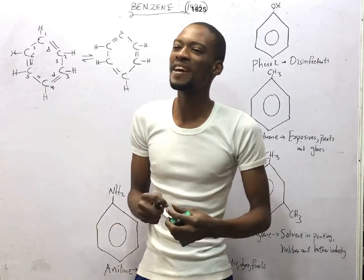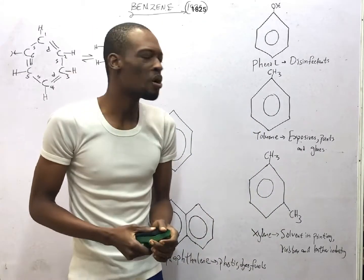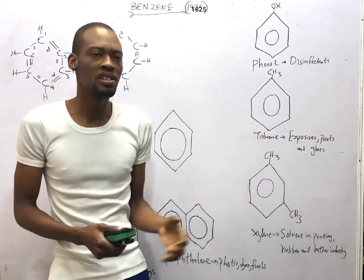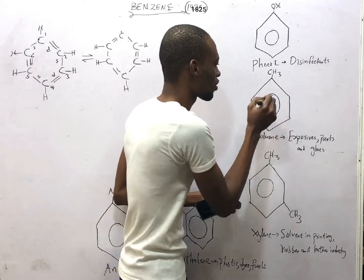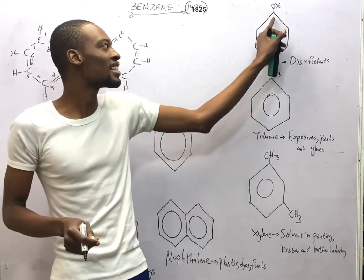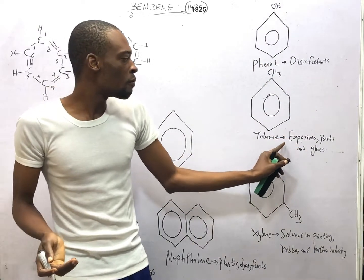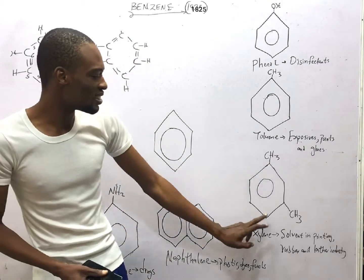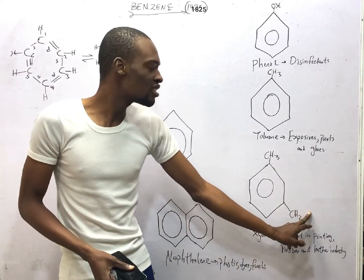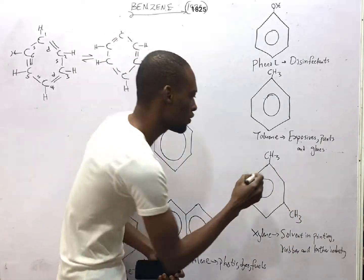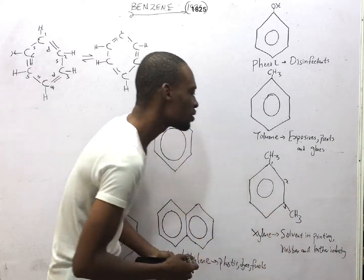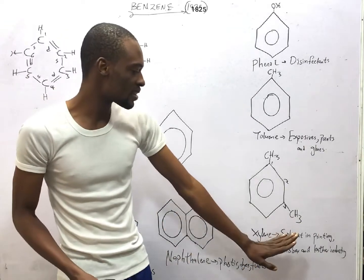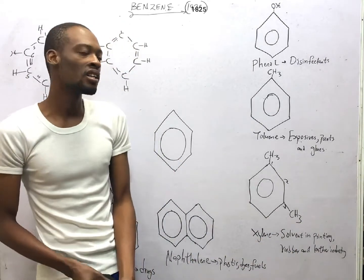When you see benzene with CH3 on top, it is referred to as toluene, or methylbenzene. Toluene is used in explosives, paints, and glues. When you see benzene with two CH3 groups, it is referred to as dimethylbenzene, also called xylene, and it is used as a solvent in painting, rubber, and leather industries.